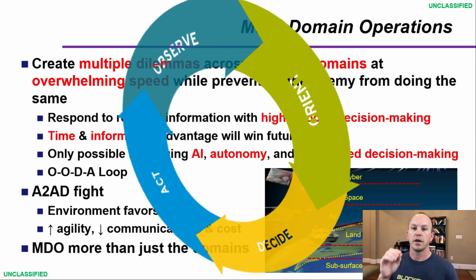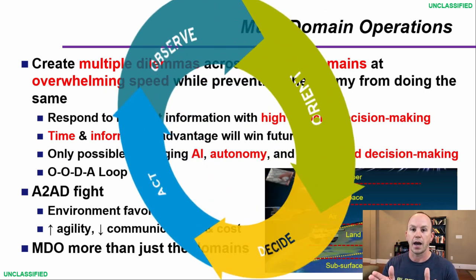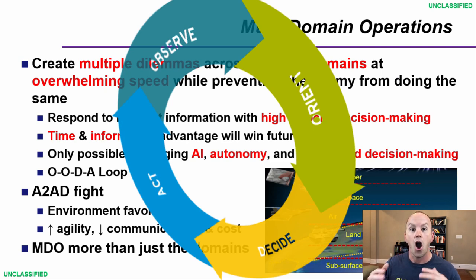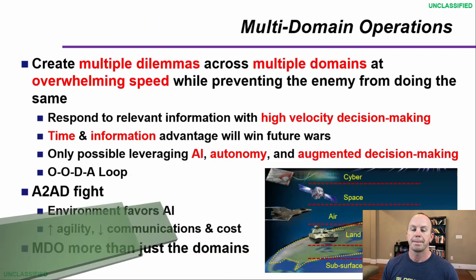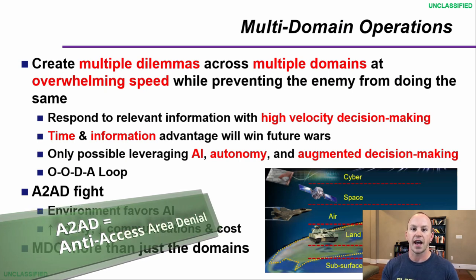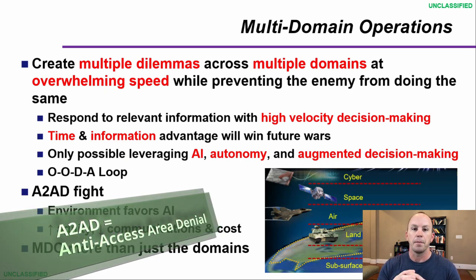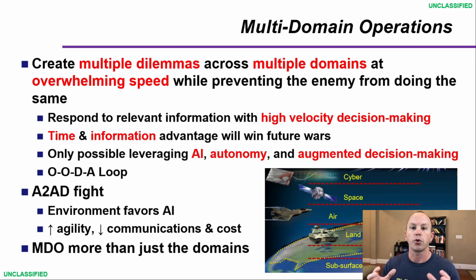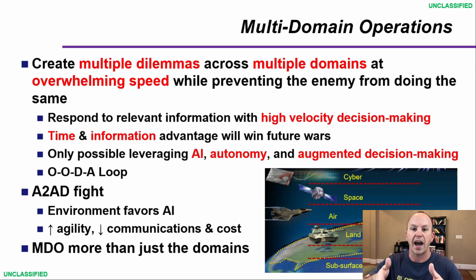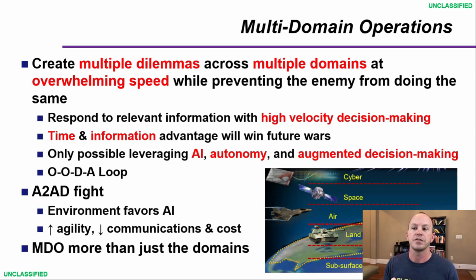You may have heard of the OODA loop — observe, orient, decide, act. I see something happening, I have some framing and background on what's happening, I make a decision, and then I can act either kinetically or non-kinetically. A2AD, anti-access area denial, refers to multiple countries creating what's considered a porcupine — an area where an adversary is not able to project power inside of.